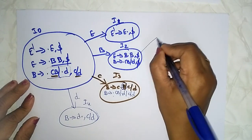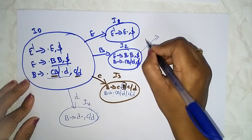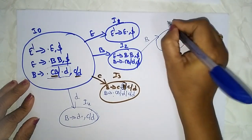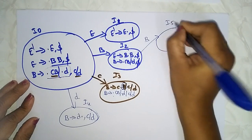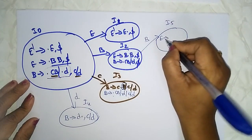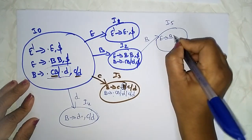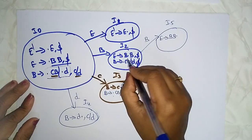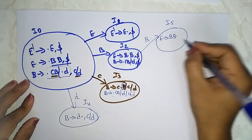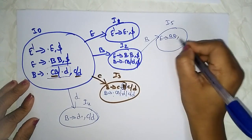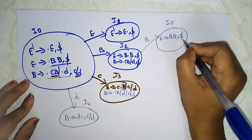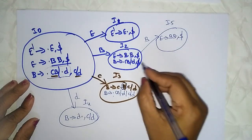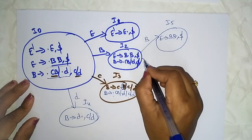I5: taking B — E → BB · with comma/dollar lookahead. After the dot nothing is there, so just leave it. Now let's take 'c'.